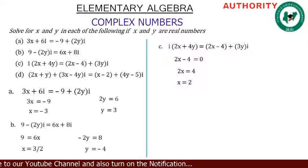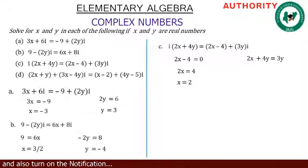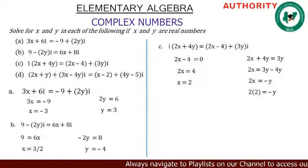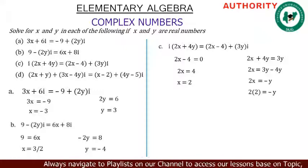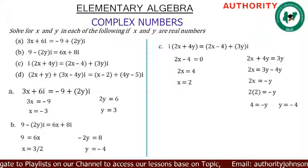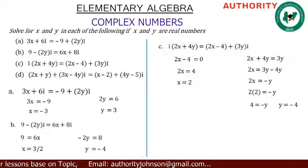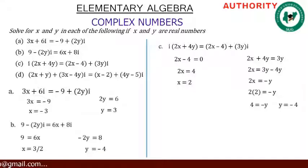The imaginary part on the left-hand side is 2x plus 4y, and on the right-hand side is 3y. Equating: 2x plus 4y equals 3y, so 2x equals 3y minus 4y, which is minus y. Since x equals 2, we have 2 times 2 equals minus y, so 4 equals minus y. Dividing both sides by minus 1 gives y equals minus 4. Therefore, x equals 2 and y equals minus 4.